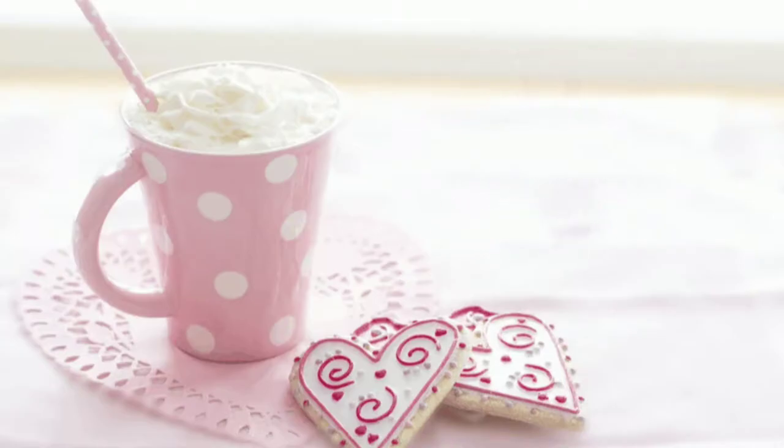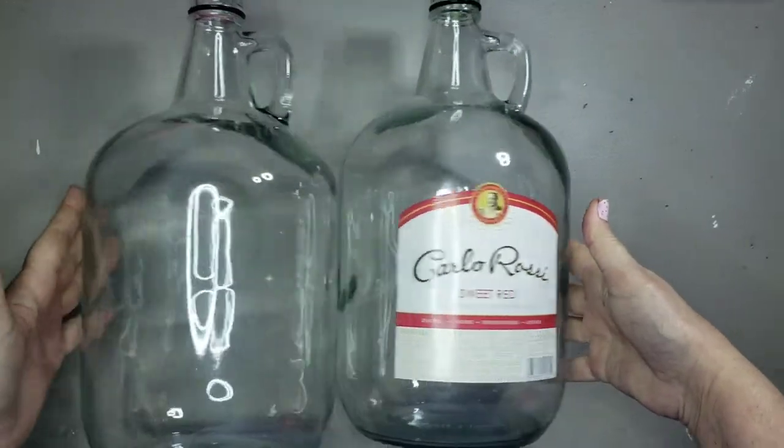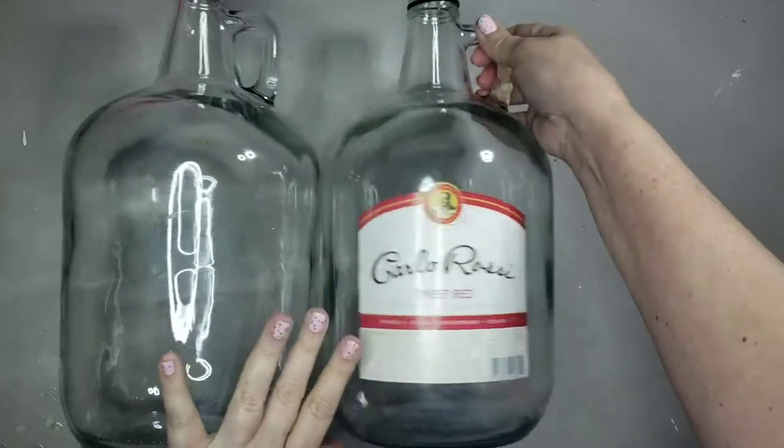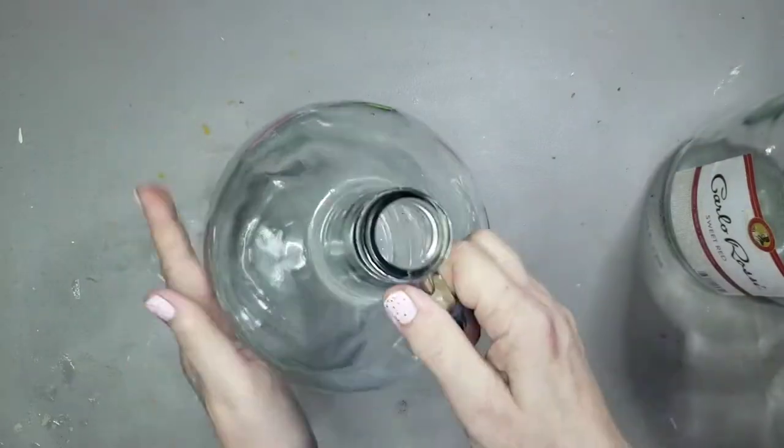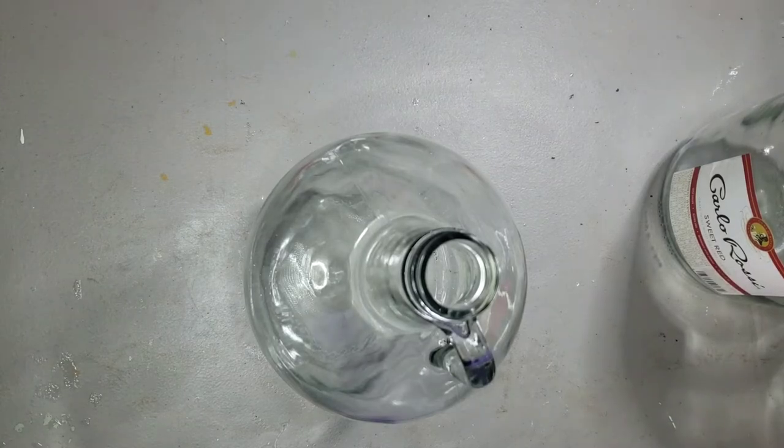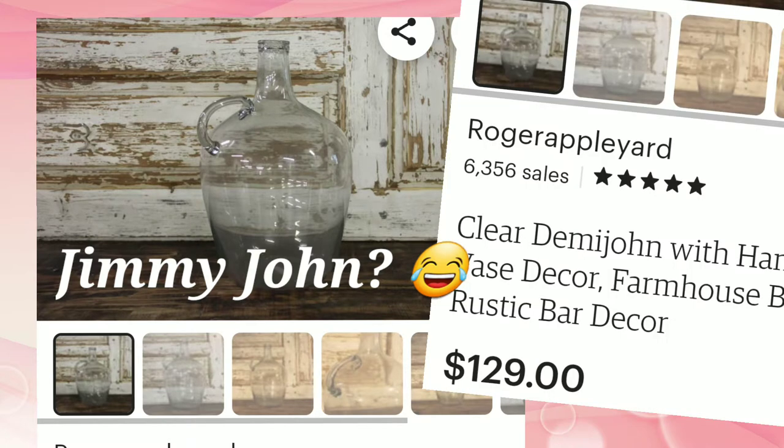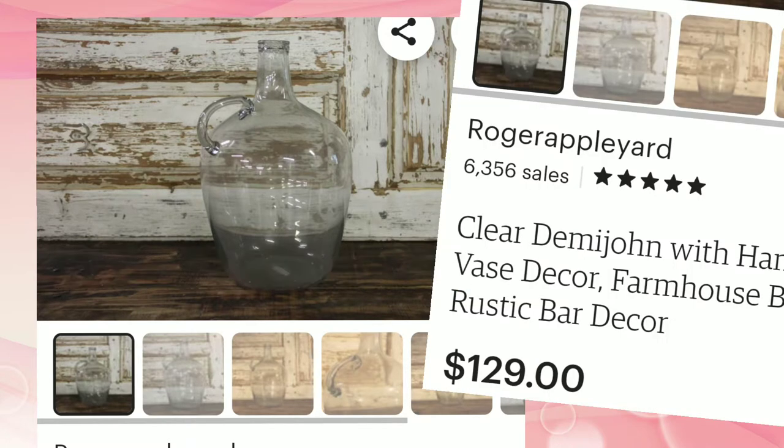This first one I'm going to be using some of these gallon size wine jugs and what I want to do is mimic the Demi John jugs. If you're not familiar with a Demi John jug here's a sample of one that I saw on eBay and they're very expensive. This one is marked $129.